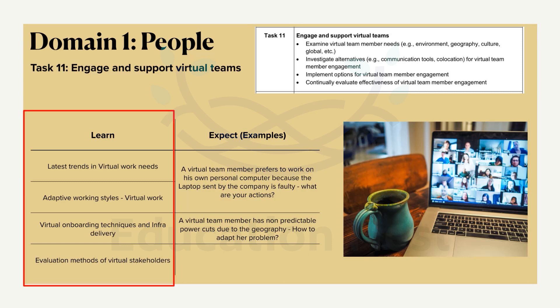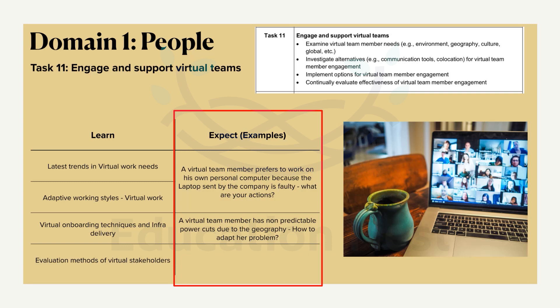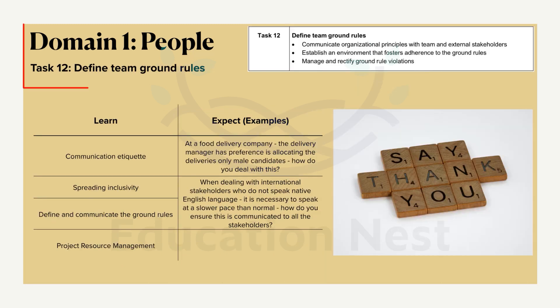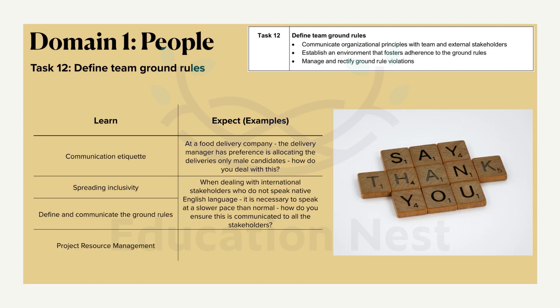Moving on to Domain 1, Task 12: Defining Team Ground Rules. This task is all about setting and maintaining etiquette within the organization — not just about being polite to fellow stakeholders, but also defining when to be formal and when one can be casual. For example, imagine a customer has invited an engineer from the after-sales team to present at the customer's premises, with about 50 people listening to the presentation.